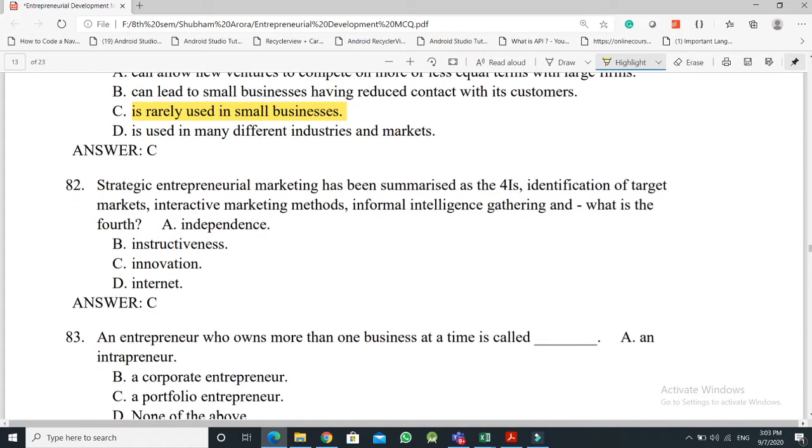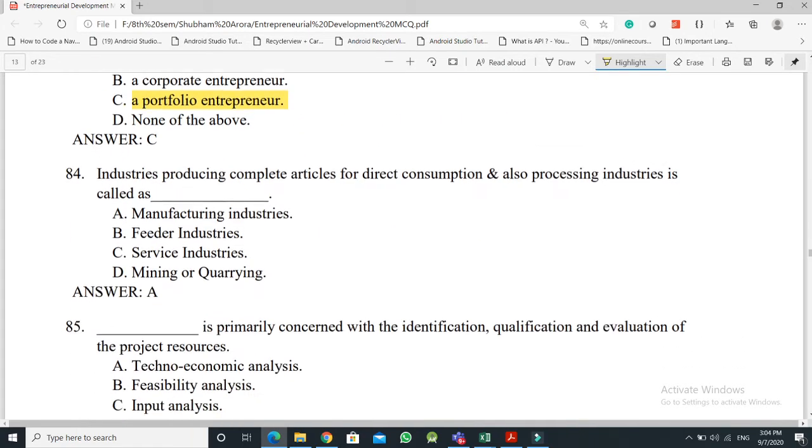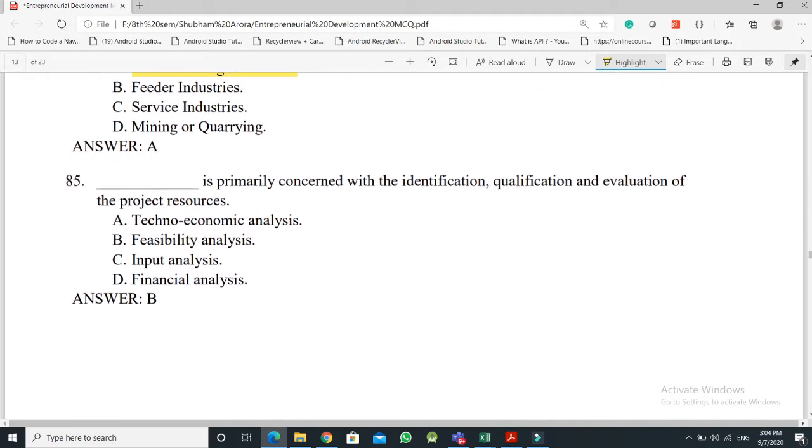Question No. 82: Strategic Entrepreneurial Marketing has been summarized as the four I's: Identification of the target markets, Interactive marketing methods, Informal intelligence gathering. And what is the fourth one - the answer is Option C, Innovation. Question No. 83: An entrepreneur who owns more than one business at a time is called - the answer is Option C, A portfolio entrepreneur. Question No. 84: Industry producing complete articles for direct consumption and also processing industries is called - the answer is Option A, Manufacturing Industries.